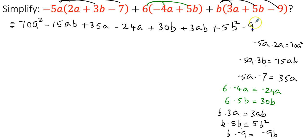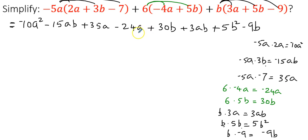Let us verify: negative 5a times 2a gives negative 10a squared — correct. 5 times 3 is 15ab with a minus — good. Negative times negative gives positive, 5 times 7 is 35a — correct. Positive times negative gives minus 24a. Positive times positive gives plus 30b. Then b times 3a is 3ab, b times 5b is 5b squared, and b times negative 9 is minus 9b. Everything looks good.